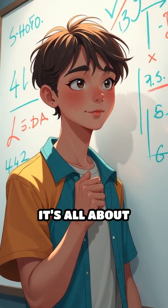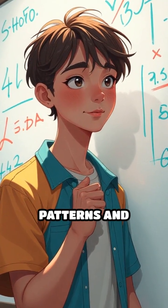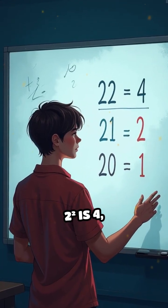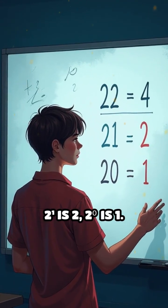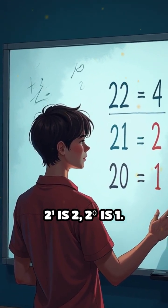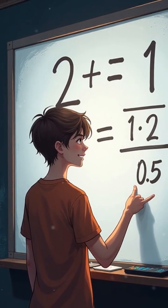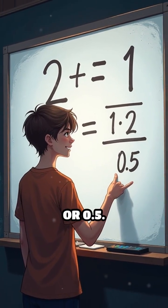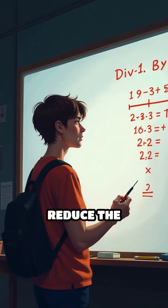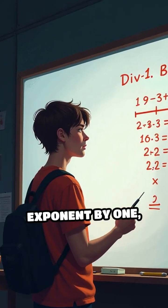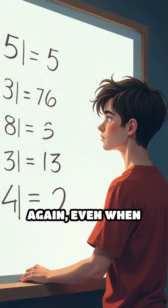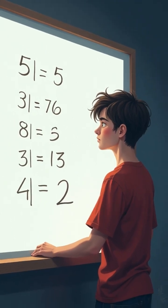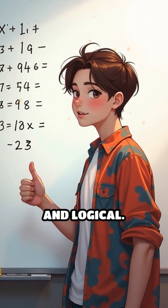Why does this make sense? It's all about patterns and consistency. If you keep dividing by 2: 2² is 4, 2¹ is 2, 2⁰ is 1. Now, if you go one step further, 2⁻¹ is 1 divided by 2, or 0.5. Each time you reduce the exponent by 1, you divide by 2 again. Even when the exponent becomes negative, this pattern keeps everything neat and logical.